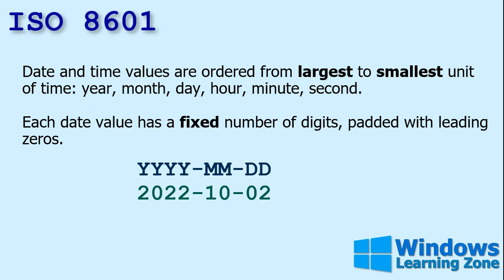It's the most logical way to format a date. Date and time values are ordered from the largest to the smallest unit — so it goes year, month, day, hour, minute, second. Each date value has a fixed number of digits padded with a leading zero, so you'll never see something like 2022-1-2. It's always 01-02.